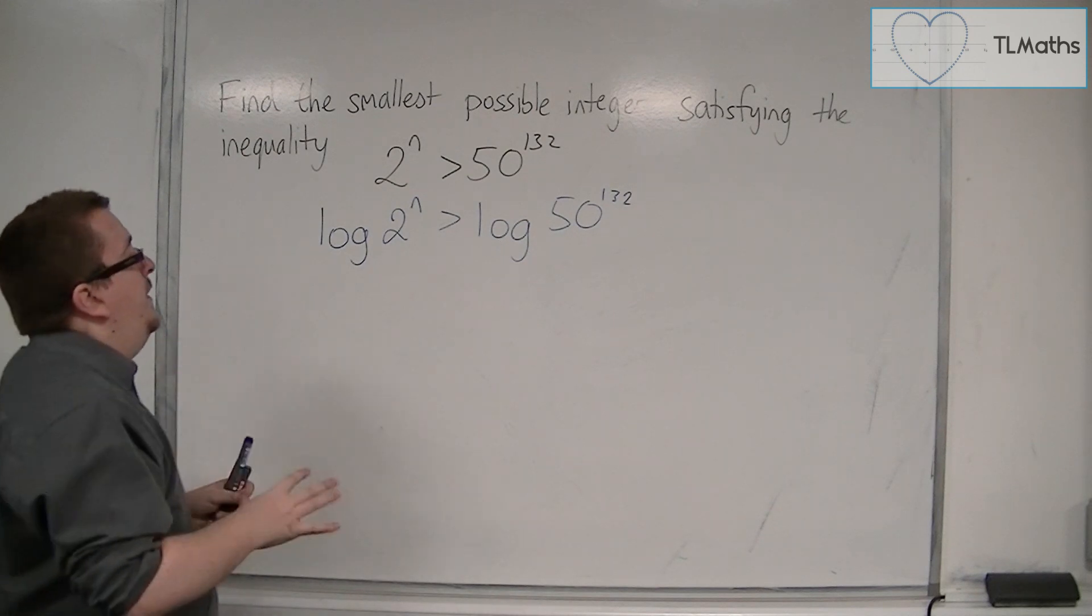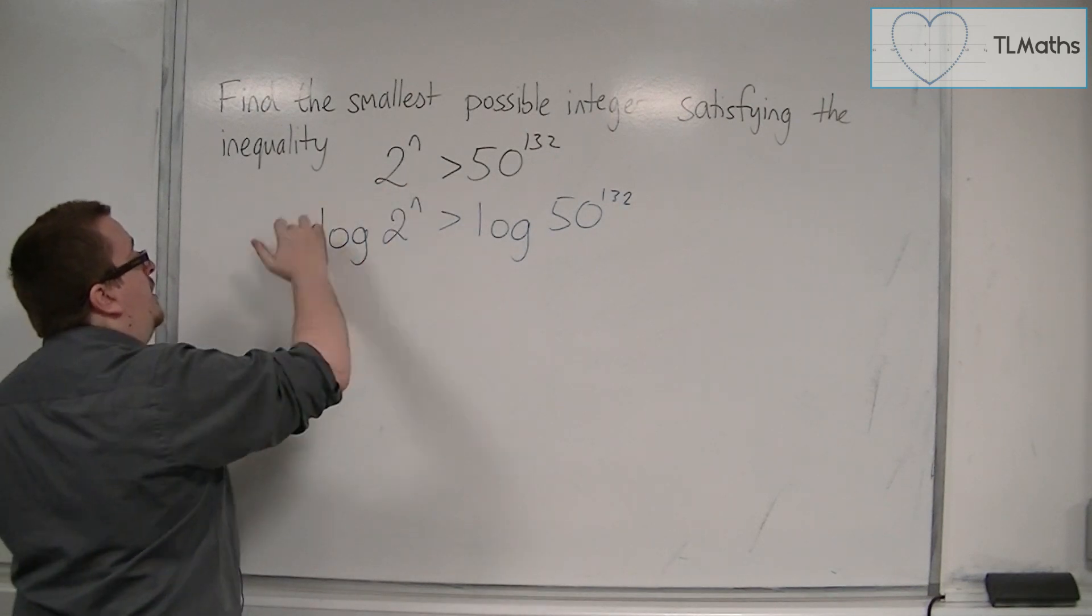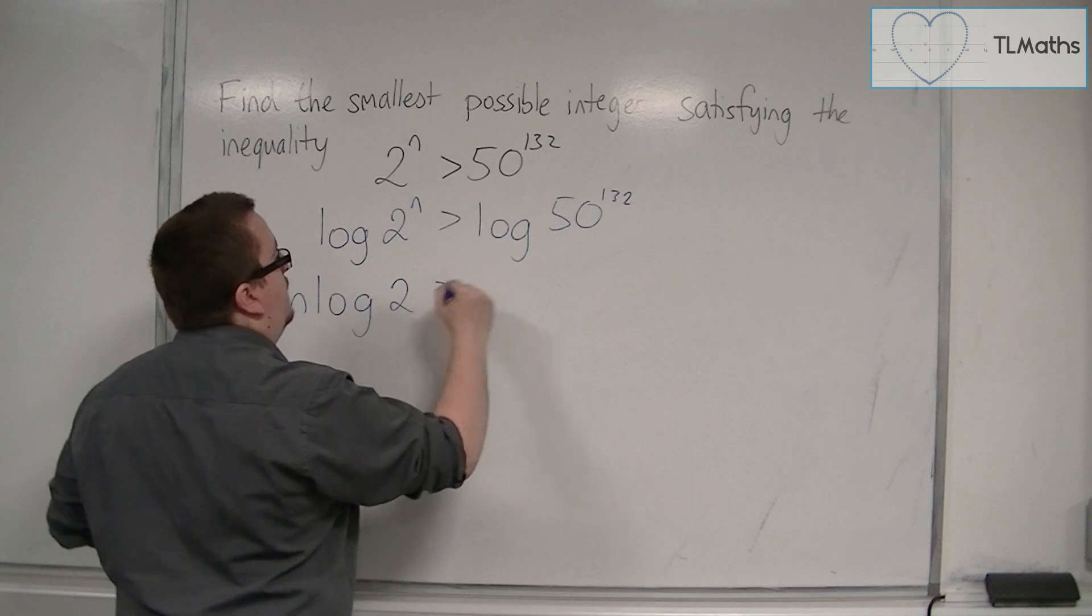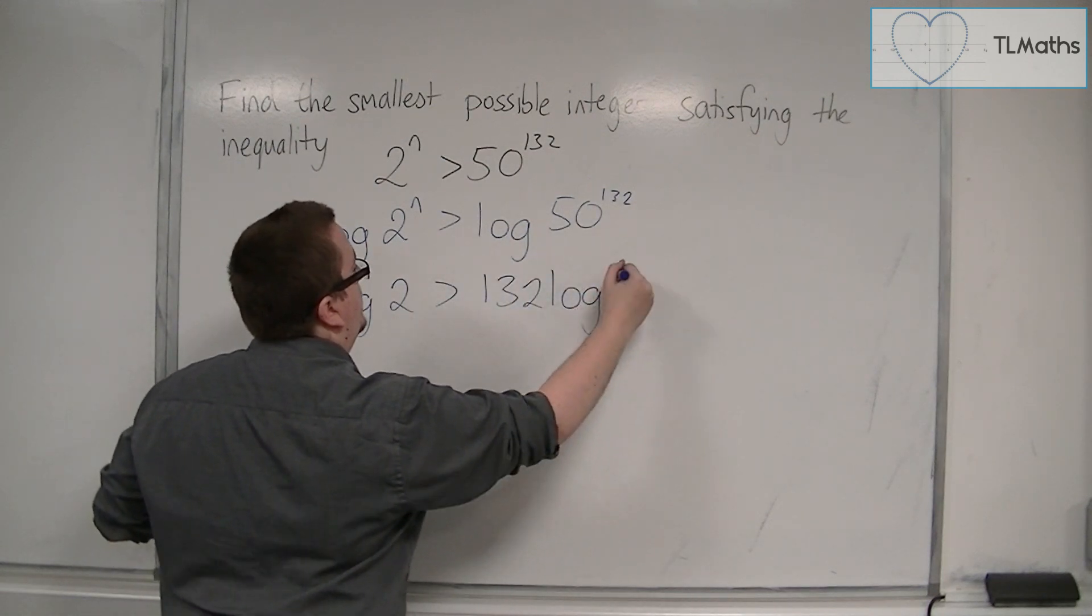Now we can use log laws to simplify this. The n can be brought down to the front: n log 2. And we can bring the 132 down to the front: 132 log 50.